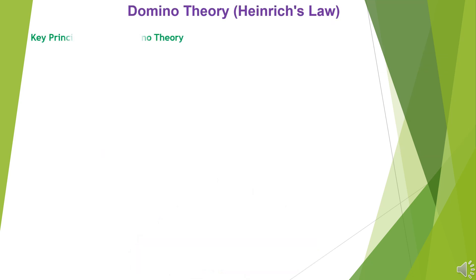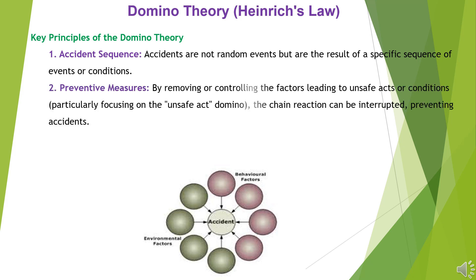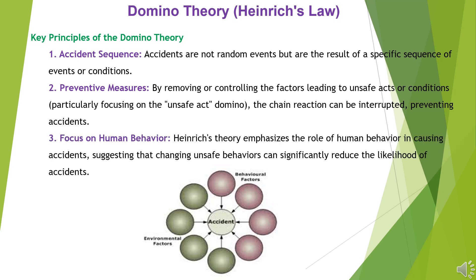Key Principles of the Domino Theory: 1. Accident Sequence — Accidents are not random events, but are the result of a specific sequence of events or conditions. 2. Preventive Measures — By removing or controlling the factors leading to unsafe acts or conditions, particularly focusing on the unsafe act domino, the chain reaction can be interrupted, preventing accidents. 3. Focus on Human Behavior — Heinrich's theory emphasizes the role of human behavior in causing accidents, suggesting that changing unsafe behaviors can significantly reduce the likelihood of accidents.